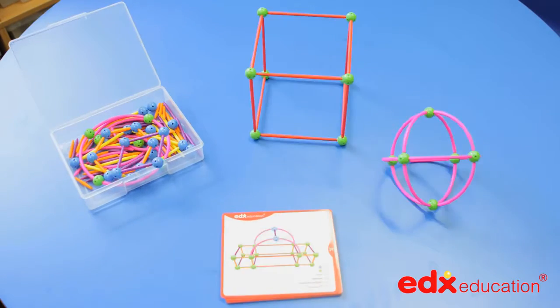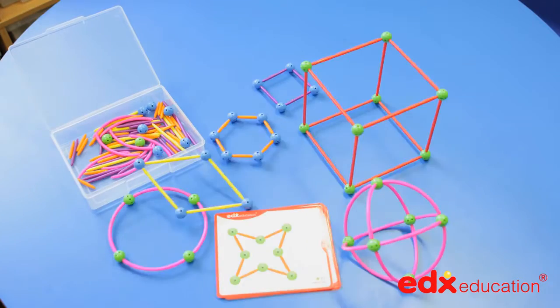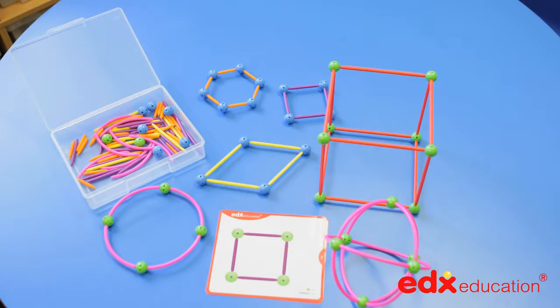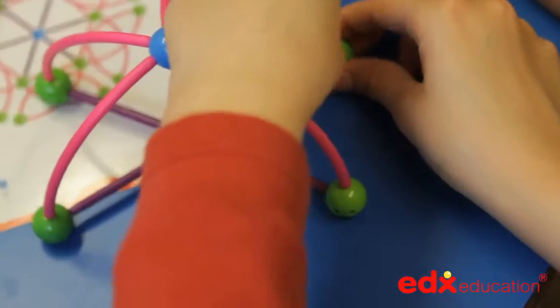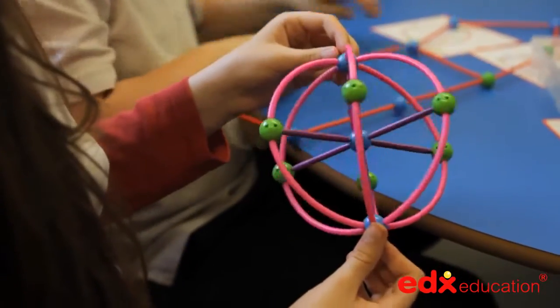The set comes in a snap-top clear box with 20 double-sided laminated work cards filled with ideas arranged as a set to provide progression from 2D to more complicated 3D shapes.